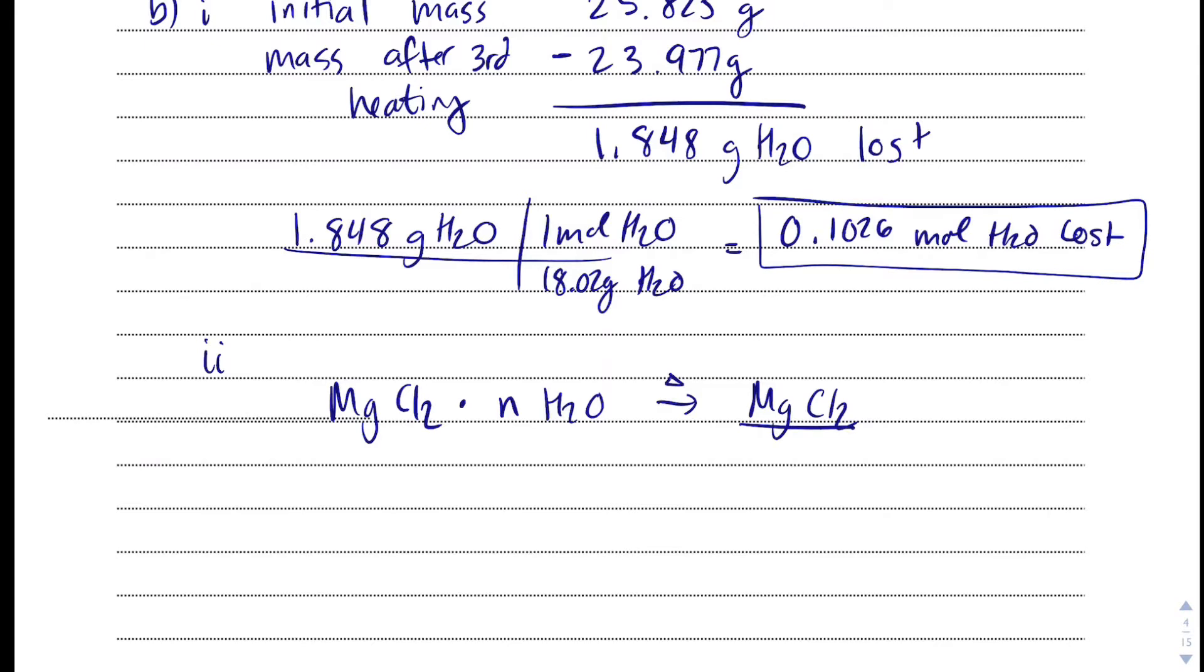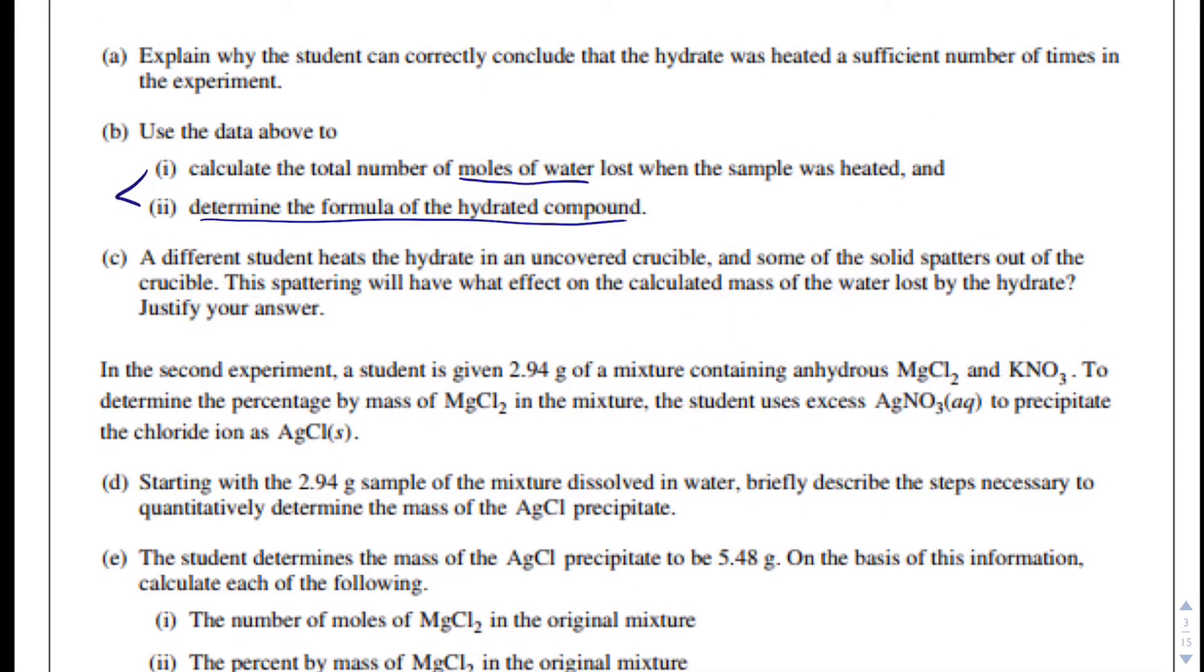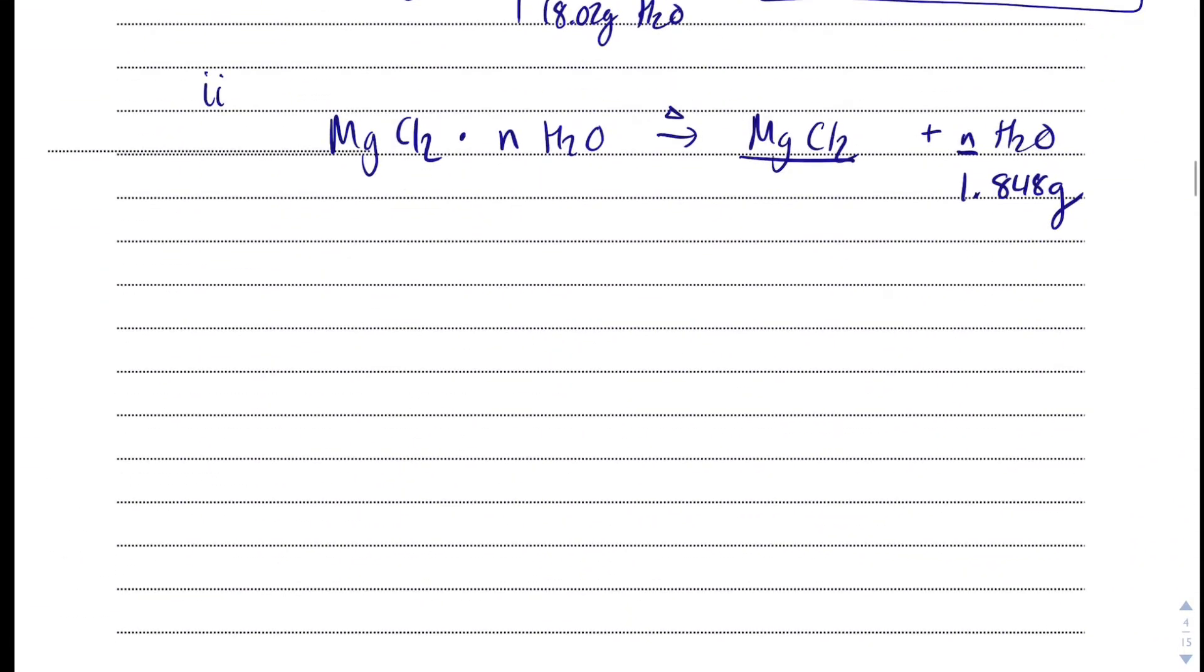N is our coefficient, and we know that that was 1.848 grams of water. If I take the mass of sample after third heating, and that was, what was that, 23.977 grams, and I subtract from it the mass of the container. In the container, the only thing left in the container after the third heating should just be the anhydrate, the anhydrous magnesium chloride.